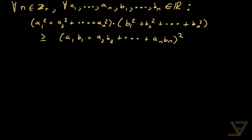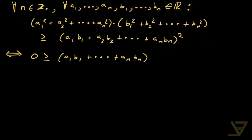This might seem a bit daunting, but let me rewrite it in an equivalent form, which is that 0 is greater than or equal to. We're going to take the left side over to the right side, so we get a1b1 all the way through to anbn squared minus the sum of the squares of the ai times the sum of the squares of the bi.